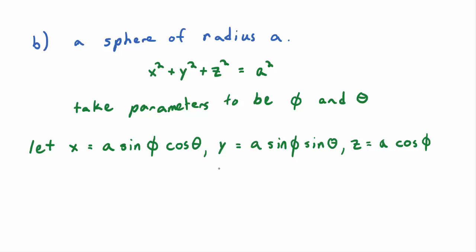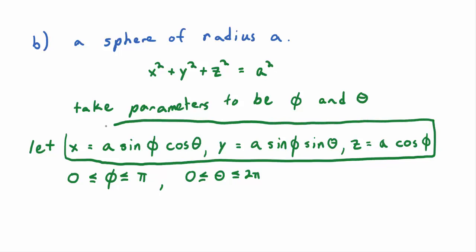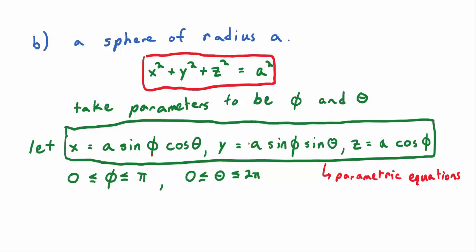We can limit the values of phi and theta: to carve out the entire sphere, let phi range from 0 to π, and theta range from 0 to 2π. These are your parametric equations. Now I need to make sure you understand why this works — let's prove it by plugging X, Y, Z into the equation of the sphere and verifying we get a true statement.